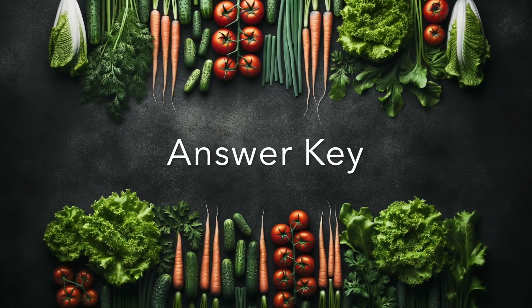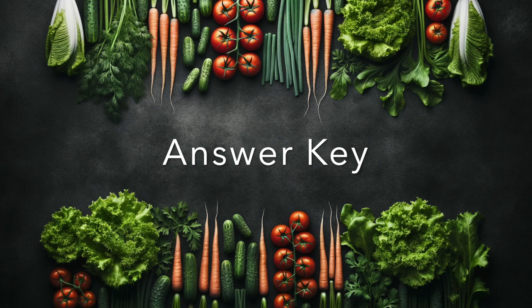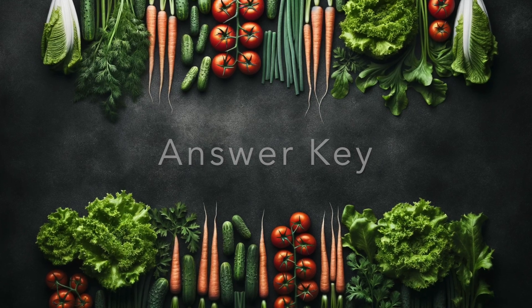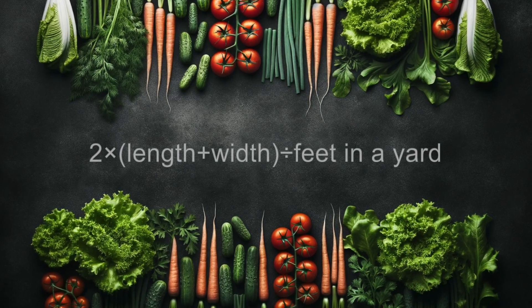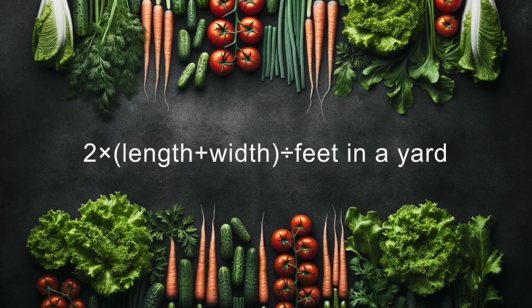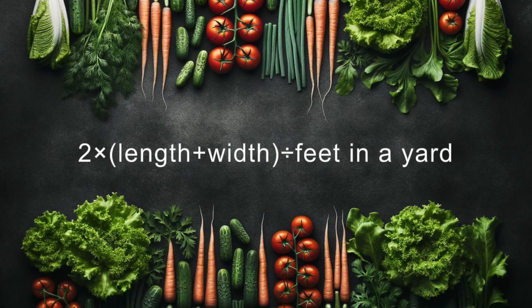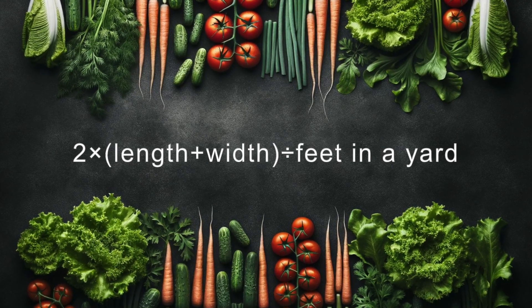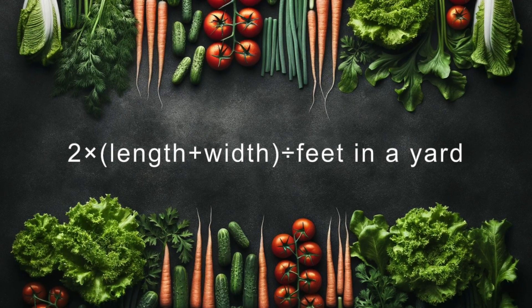Now, let's see how the answer key approaches this problem. The answer key confirms that the correct answer is indeed D. It uses a straightforward formula to determine the perimeter in yards. The formula given is 2 times length plus width divided by feet in a yard. Let's break it down step by step.